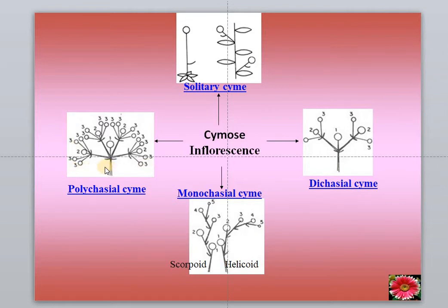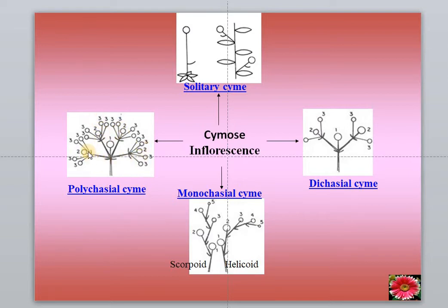Looking at the left side diagram, the terminal bud ended in a flower and it produced multiple cymose signs. This cymose sign has a terminal flower; there is a second, third, and fourth one. This is the case where the cymose inflorescence has multiple cymose signs from the lateral bud. This is called a polychasial cyme.